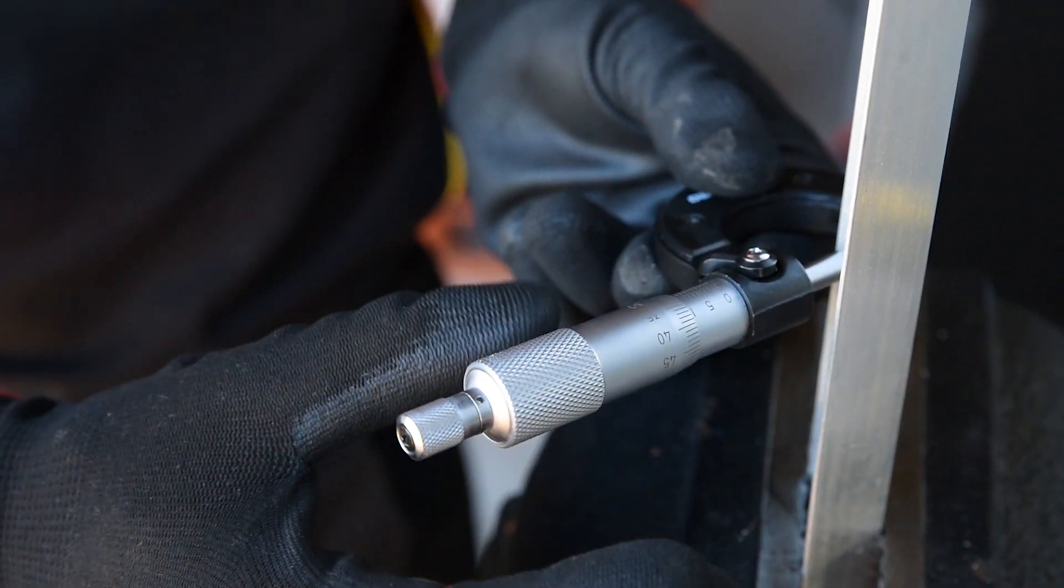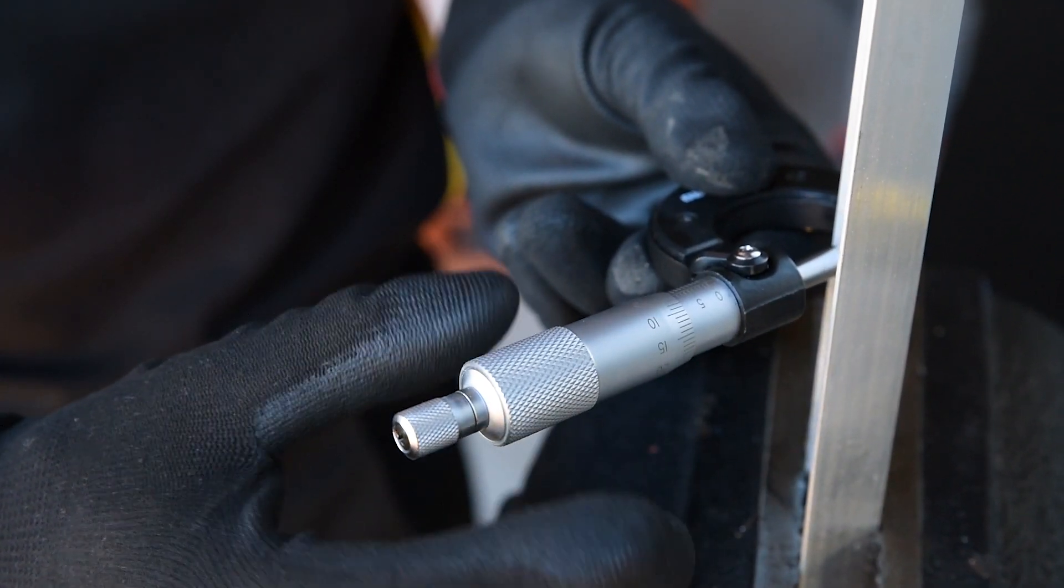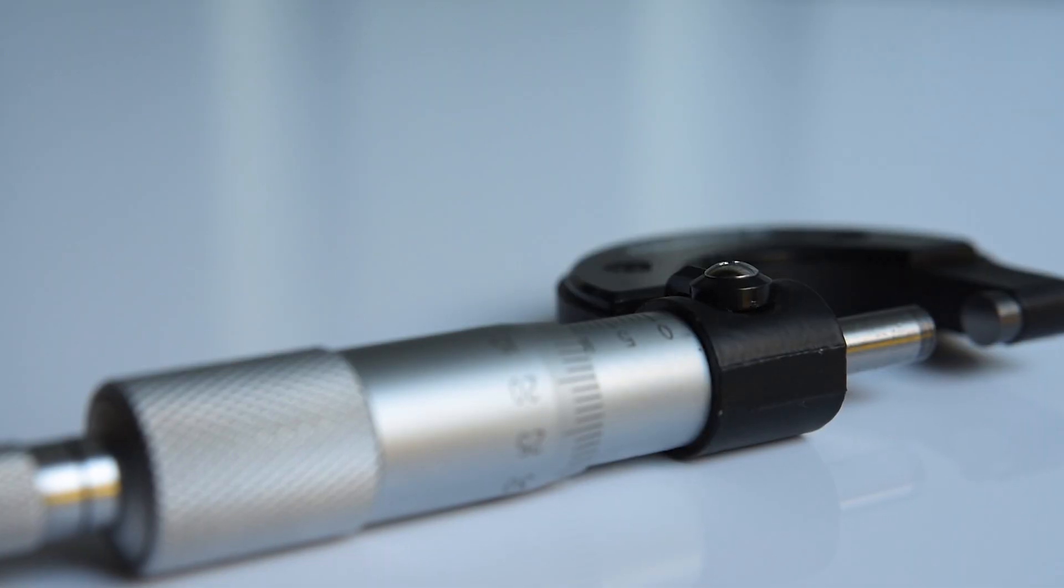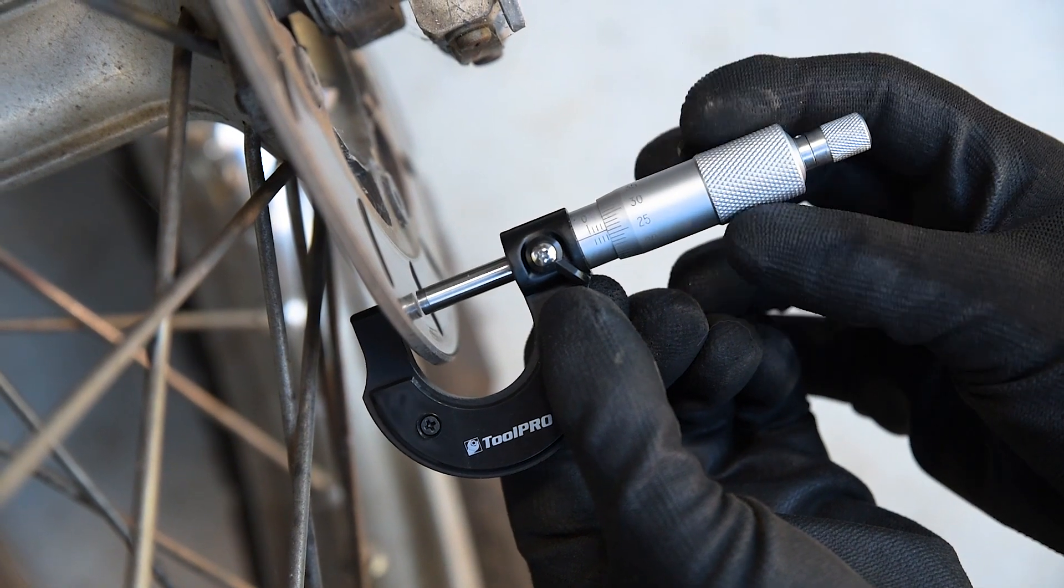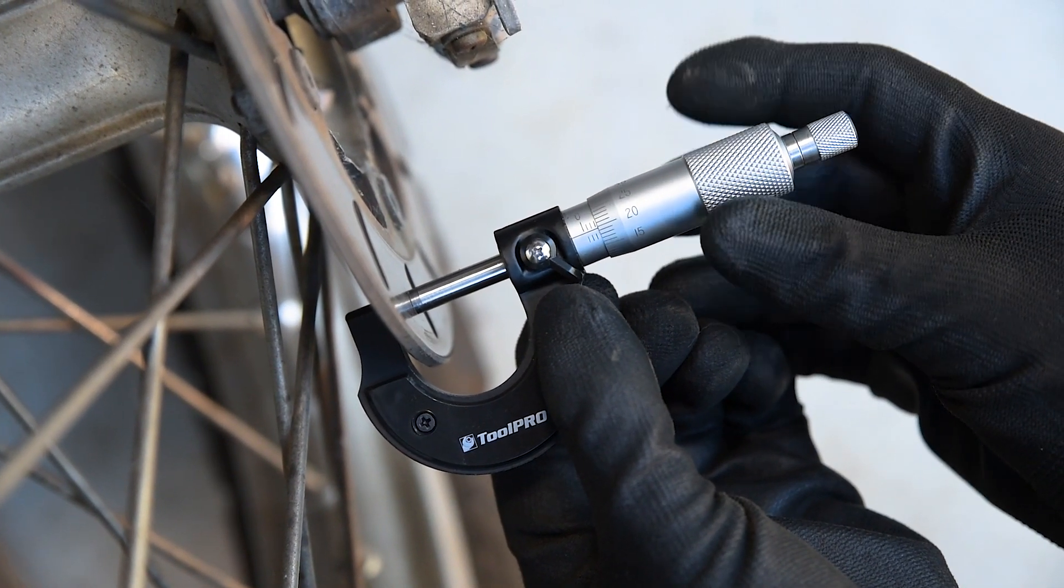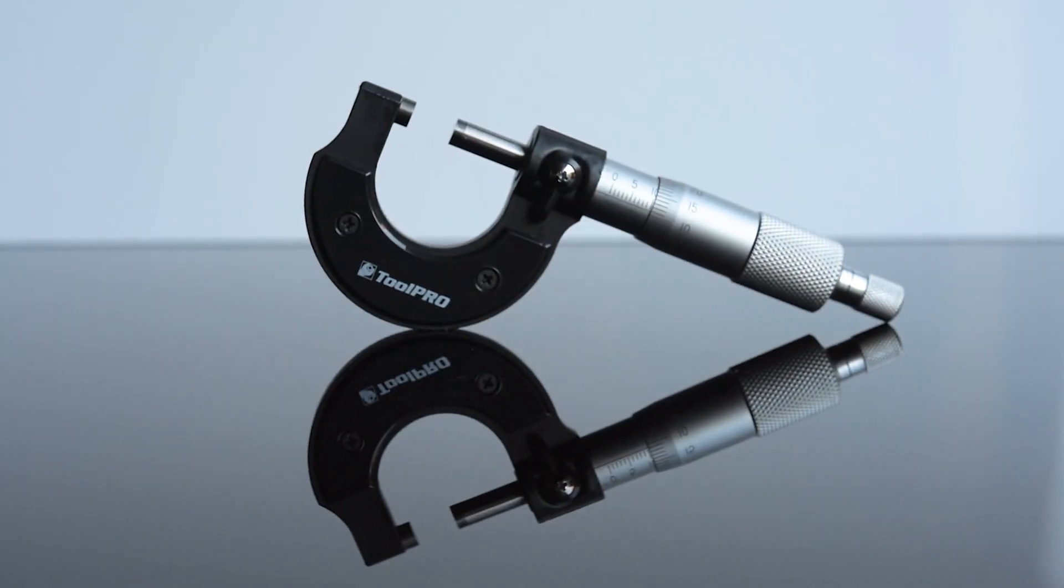The outside micrometer boasts a measurement range from 0 to 25 millimeters. Measurements can be taken with one-hundredth of a millimeter accuracy. Use it for precise measurement of brake rotor thickness or any flat, cylindrical, or spherical objects.